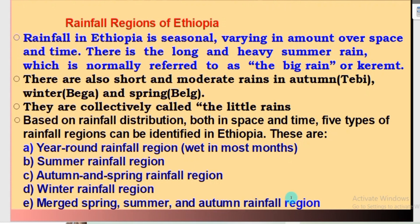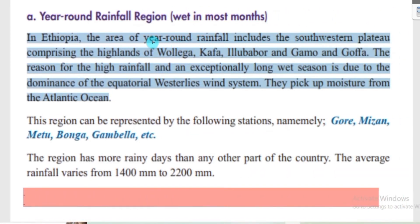The year-round rainfall region is called the wet region. In Ethiopia, the year-round rainfall region includes the southwestern plateau, comprising the highlands of Wellega, Kaffa, Illubabor, Jimma, and the Goffa areas. These areas are located around this region and are known as the wet regions. This region receives rainfall throughout the year.